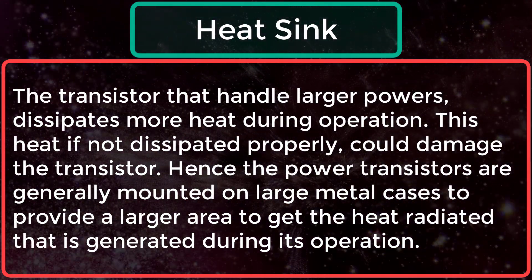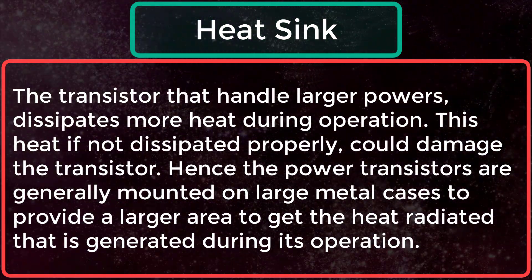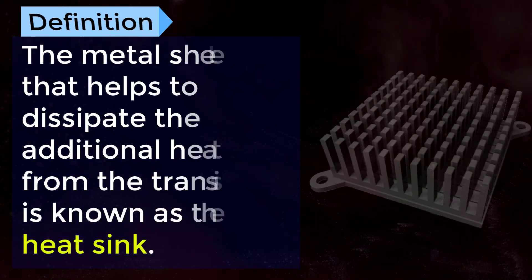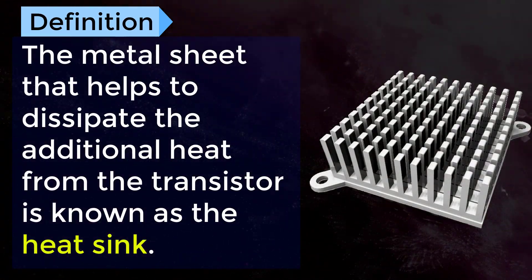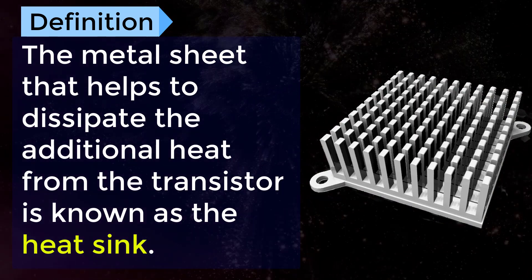to provide a larger area to get the heat radiated that is generated during its operation. The metal sheet that helps to dissipate the additional heat from the transistor is known as the heat sink.